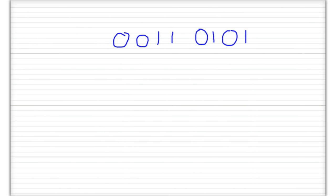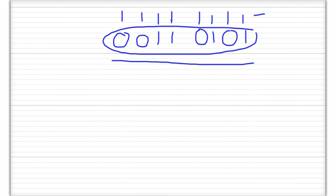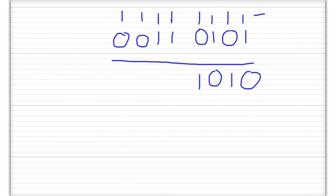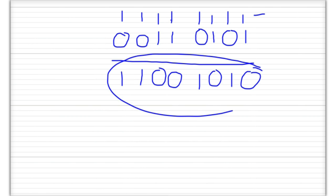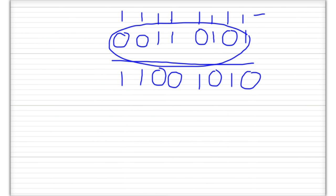For example, to find the negative of the binary number 00110101, we subtract each digit from one — that's 11111111 minus 00110101. The shortcut is to just swap the ones and zeros: 1 minus 1 is 0, 1 minus 0 is 1, and so on. We've just swapped the binary digits, so that's how we get the ones complement of a binary number.